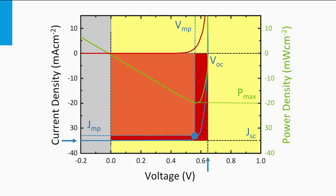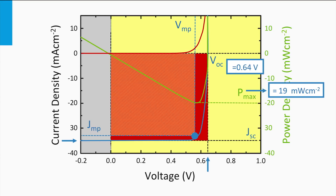Let's get a feeling for typical values. Looking at an example JV curve measured under standard test conditions, representative of crystalline silicon solar cells: the maximum power density is 90 mW per square centimeter, giving a conversion efficiency of 19% under the standard irradiance of 100 mW per square centimeter. With an open circuit voltage of 0.64 volts and a short circuit current density of 35 mA per square centimeter, we arrive at a fill factor of 84.8 percent.